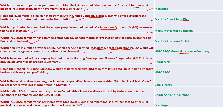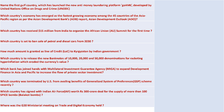Bharti Airtel tied up with HDFC Life to provide life cover to its prepaid customers. HDFC ERGO partnered with IBM to set up a data lab in India to improve business efficiency and profitability. Bajaj Finserv launched a special insurance cover called Mumbai Local Train Cover for passengers traveling on local trains in Mumbai. Bharti AXA Life Insurance was conferred the Claim Excellence Award by the Federation of Indian Chambers of Commerce and Industry.